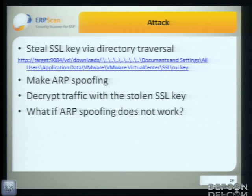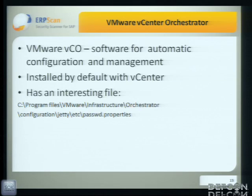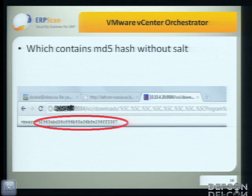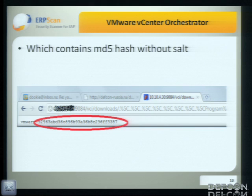But what if ARP spoofing doesn't work? We did a little more analysis and found vCenter Orchestrator — software for automatic configuration and management of vCenter, installed by default with vCenter. It has interesting files like gate, etc., and password properties. Each contains an MD5 hash without salt. Nowadays, that's not very secure. So we brute-forced them and gained control.